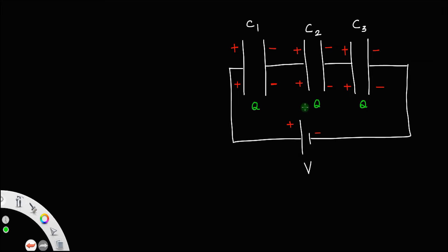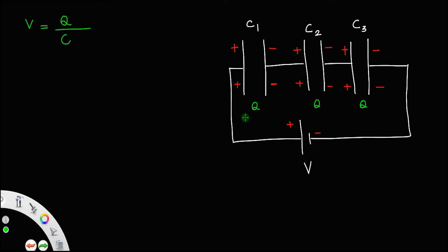You do not have to write Q1, Q2, Q3 because all the charges remain the same. And you know, potential V will be, by definition, potential is equal to charge by capacitance. Since the charge remains the same and capacitance is different, the potential drop across each capacitor is different. So let us say V1 is the potential drop across the first capacitor, V2 across the second, and V3 across the third.